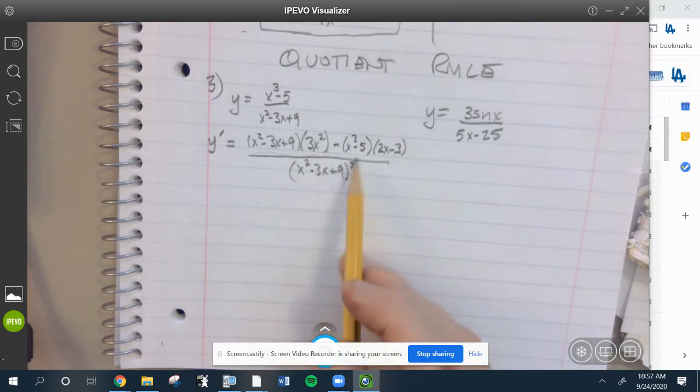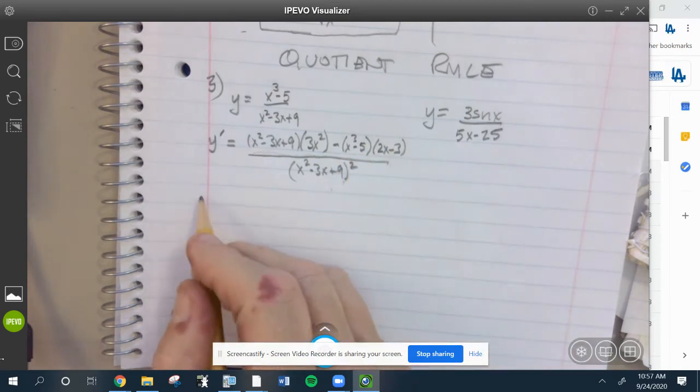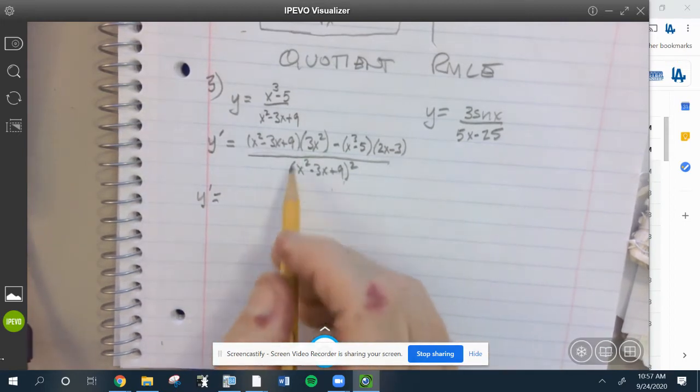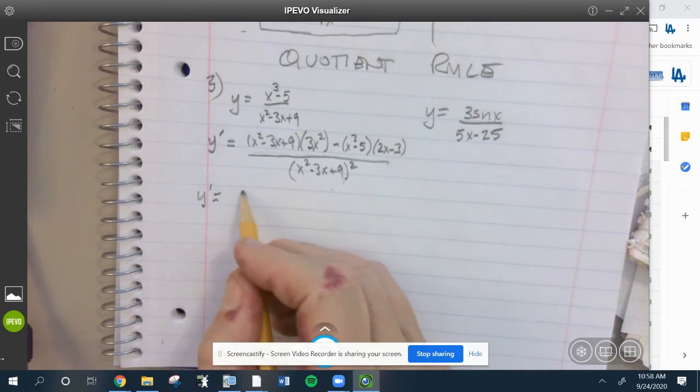There's nothing factorable here, but you can multiply these out - this one by distributing the 3x squared, this one by foiling - so you'll be able to combine like terms. It's not a very difficult simplification, you just have to multiply.